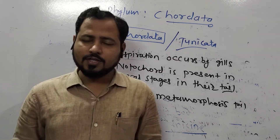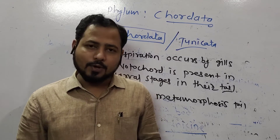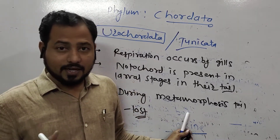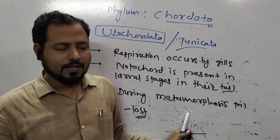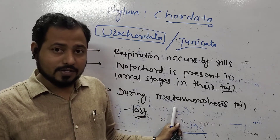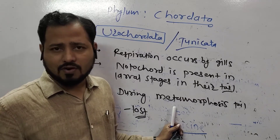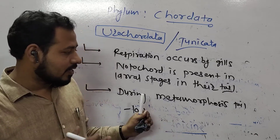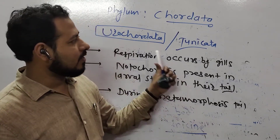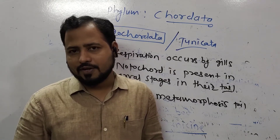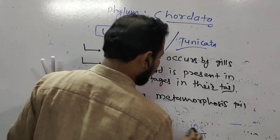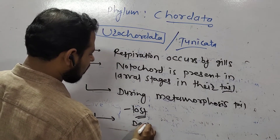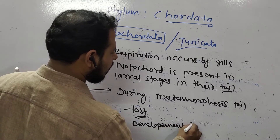Along with the tail, the notochord too gets degenerated during metamorphosis. So in the initial larval stages, notochord is present in the tail. But when they undergo metamorphosis, the tail and notochord disappear. At least in earlier developmental stages, the notochord is present. They show indirect development.